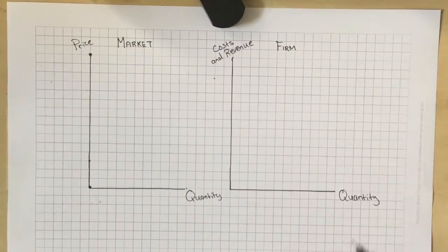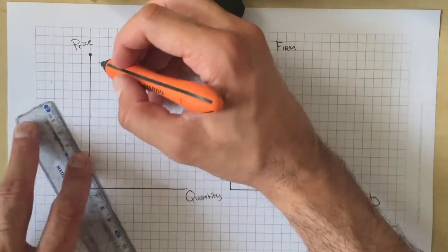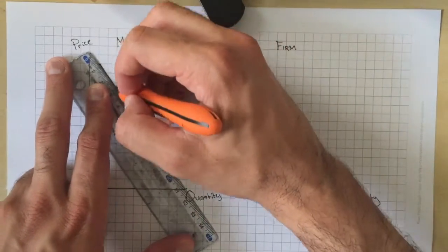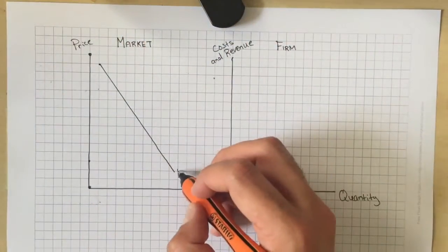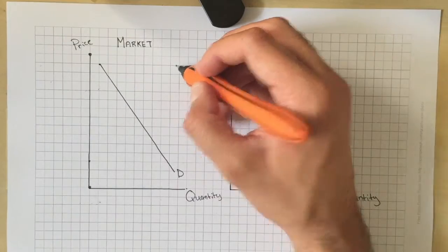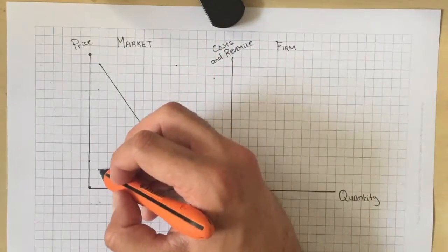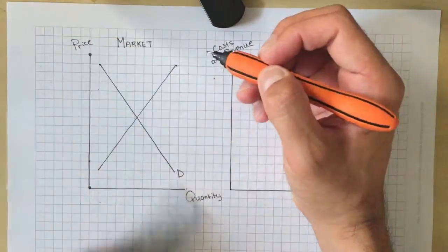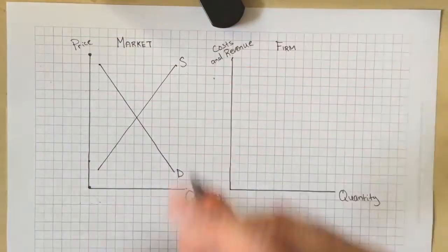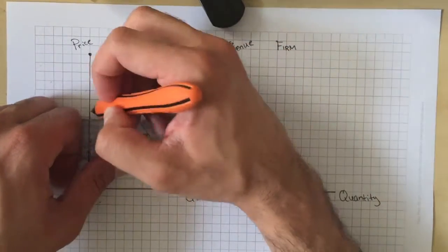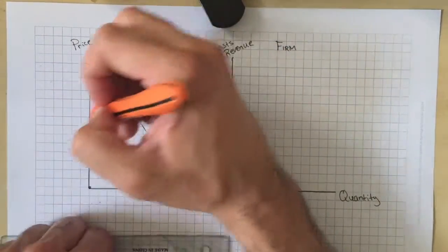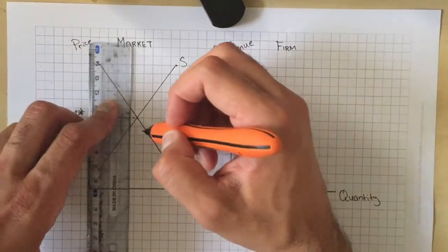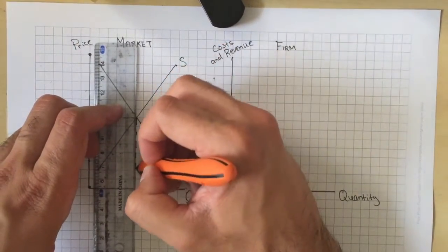Now I'm going to draw the basic supply and demand diagram that you've learned in AS Economics or your first year of economics. I'm going to have the curves intersect and label the equilibrium price and equilibrium quantity. I'll label the upward sloping supply curve and downward sloping demand curve, with price as P* and equilibrium output as Q*.